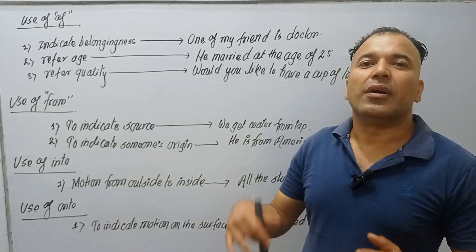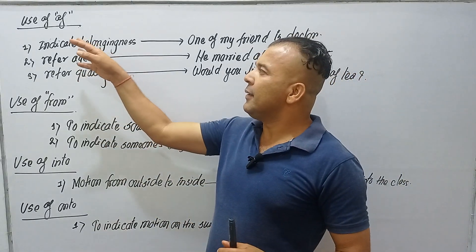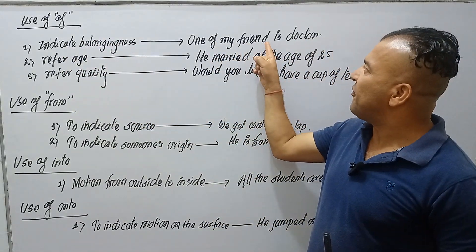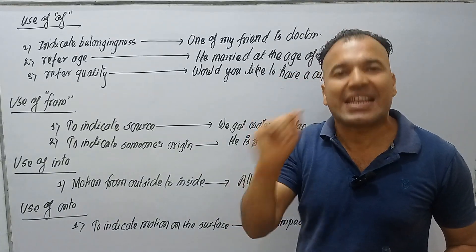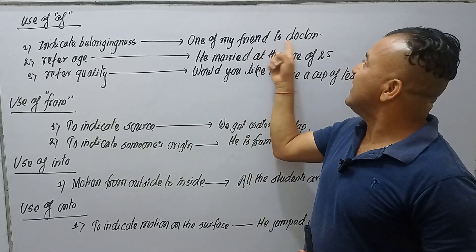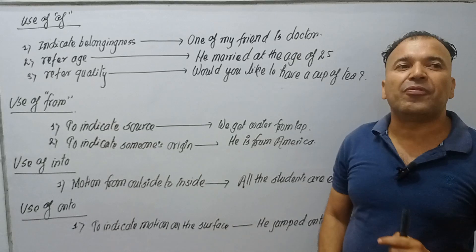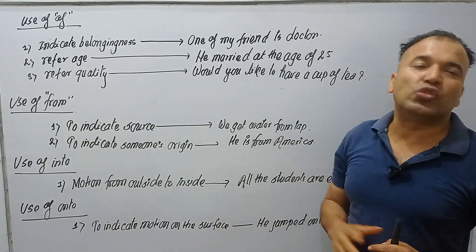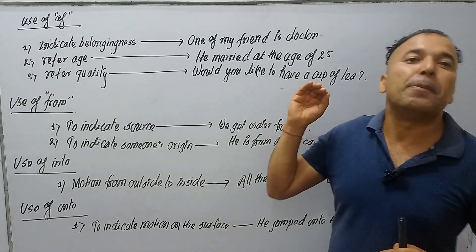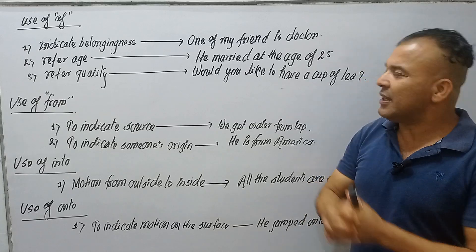The preposition OF is used to indicate belongingness. For example: 'One of my friends is a doctor.' Here, the belongingness of the sentence shows that being a doctor is the attribute belonging to my friend.